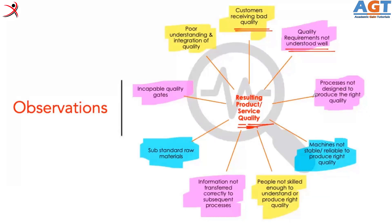Then there are processes not designed to produce the right quality. Many times in many products, there will not be a good process. For example, if they have to make a particular design at the collar, maybe the factory doesn't have the right machinery or the right skill to make that particular process. So throughout the production duration, they are struggling to get the right quality — the process itself is not designed to produce it.